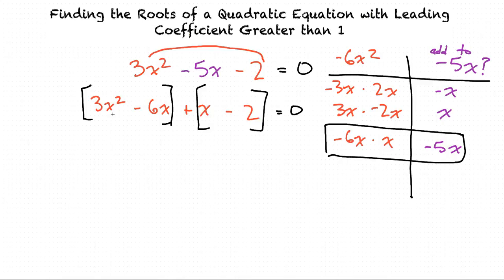In our first part, 3x² - 6x, we will factor out the greatest common factor, 3x. Leaving us with 3x times x, because 3x² divided by 3x equals x, and minus 2. 6x divided by 3x is 2, and we have a minus sign in there.